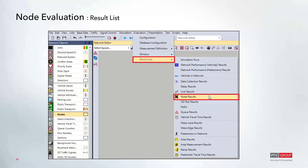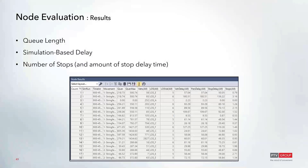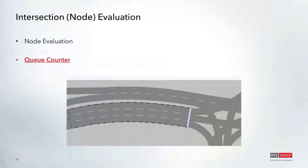All node results can be found under the Result List under the node results option. This list allows you to view queue length data, information about the number of stops and stop delay time, as well as vehicle delay. Note that this is simulation-based delay, and any assigned LOS values shown within Vissim are assigned based on that simulation-based delay.